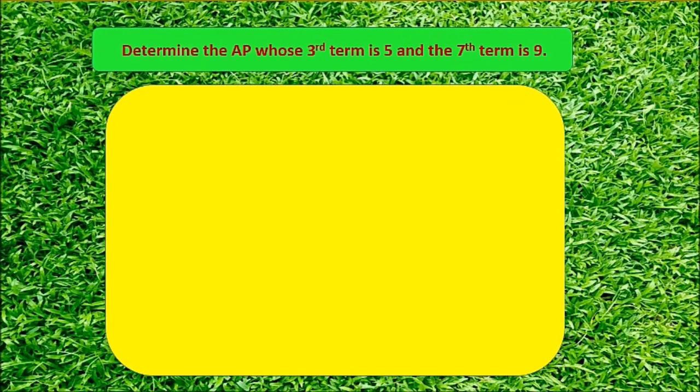Here they are given: 3rd term A3 is 5, that is A plus 2D equals 5. 7th term A7, that is A plus 6D equals 9.